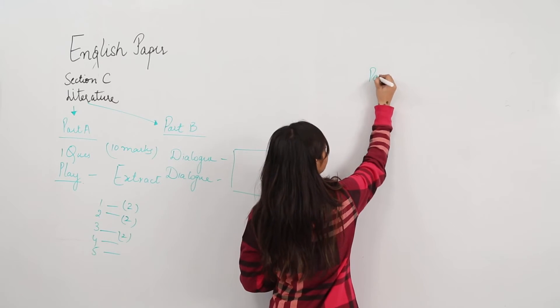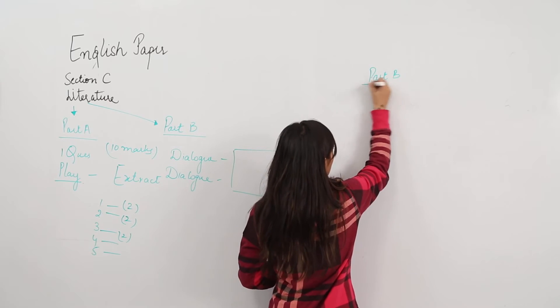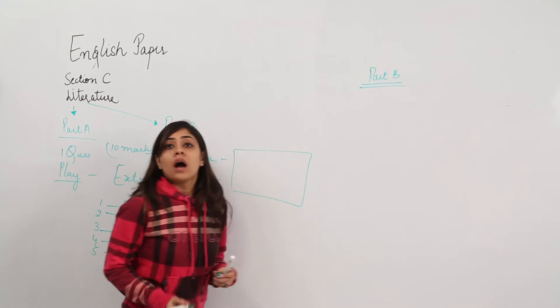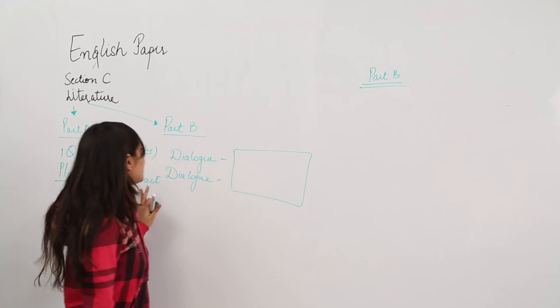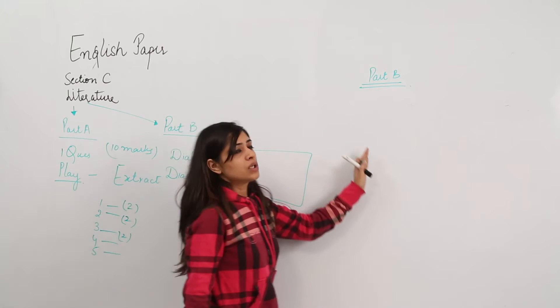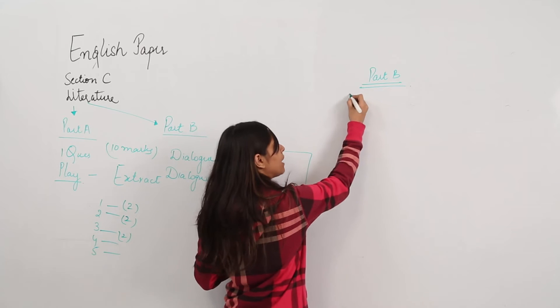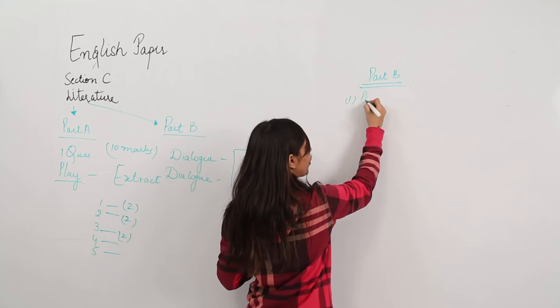Let's understand part B. We need to keep in mind that if we have already attempted a question of play, let's move on to something different. Maybe try attempting a question from the poems.